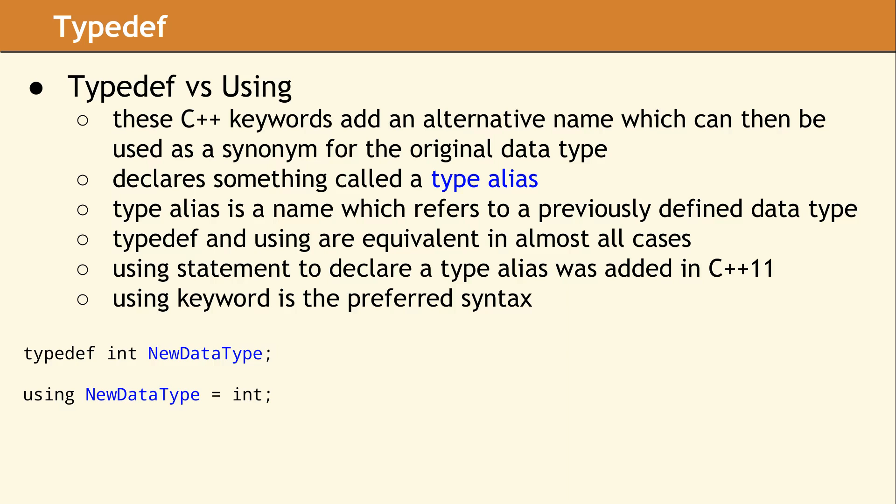Both the typedef and using keywords declare what is called a type alias. A type alias is simply a new name for an existing data type. It cannot be used to declare a new data type. While the using statement is preferred in modern C++ code, the typedef keyword has the same effect in most cases. The two declarations shown here have exactly the same meaning and effect.